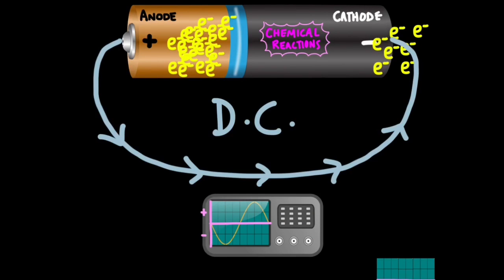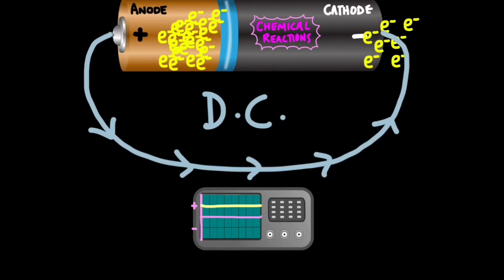It's also important to remember that batteries, or cells rather, are a source of direct current — in other words they push electrons in one direction around the circuit. This can be represented on a cathode ray oscilloscope trace. An alternating current trace goes from negative to positive, implying current is going one way around the circuit and then the other — you would expect this if you attached a generator to the circuit. A direct current will only be in one area of the trace, either positive or negative.